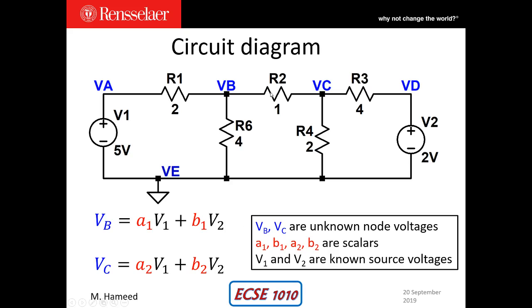So if we can express our two unknown voltages VB and VC as a linear combination of the two known voltages V1 and V2, we could do that if we have scalars A1, B1, A2, and B2.